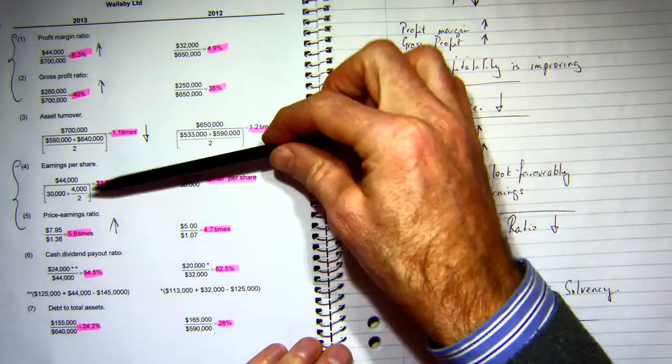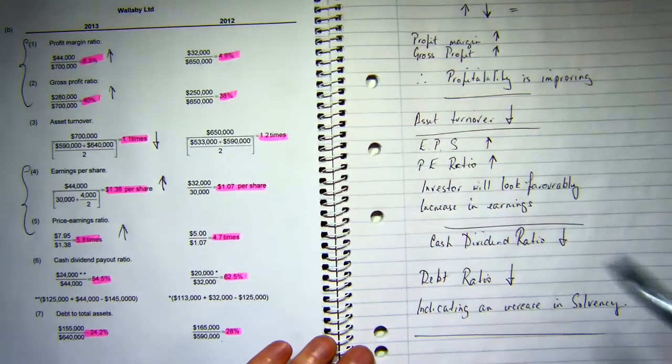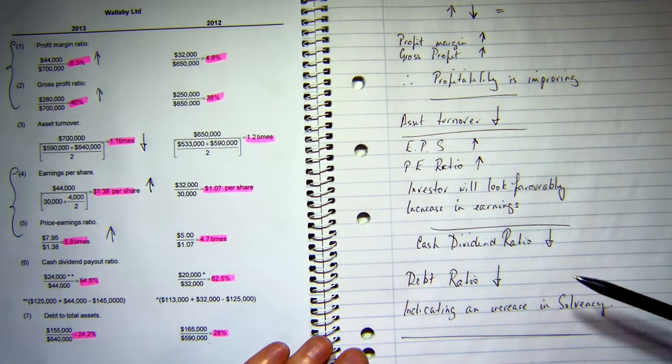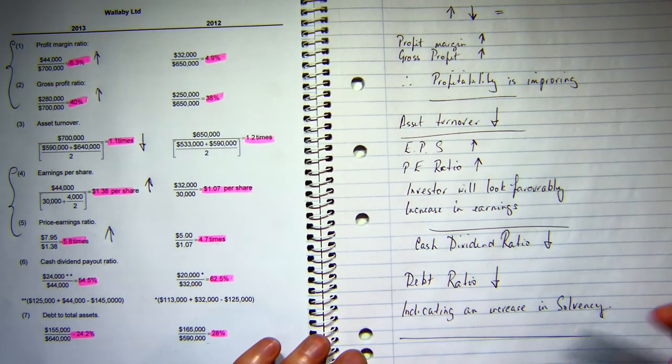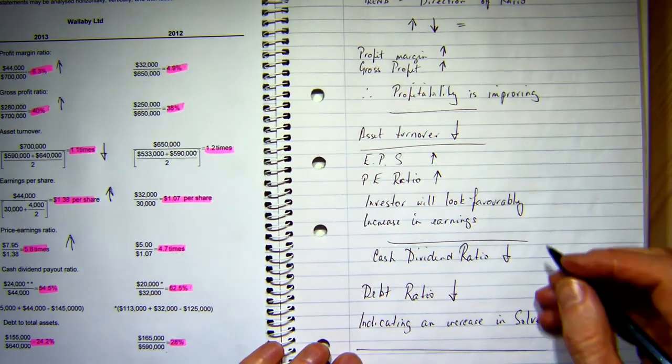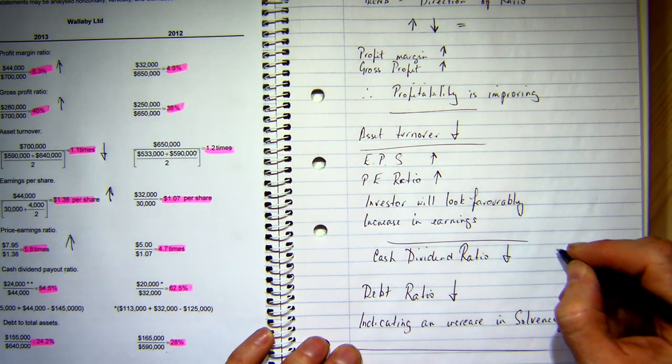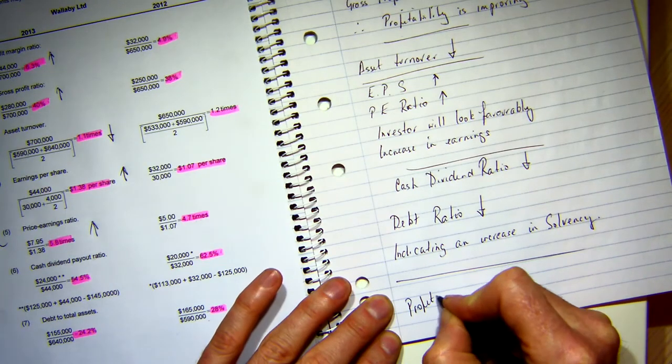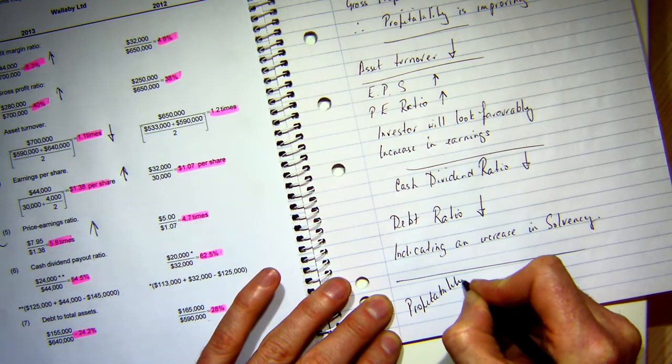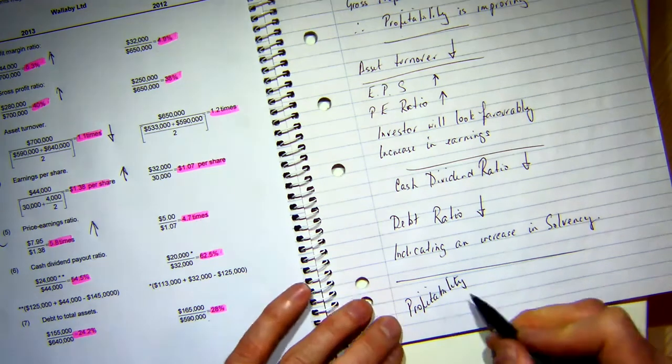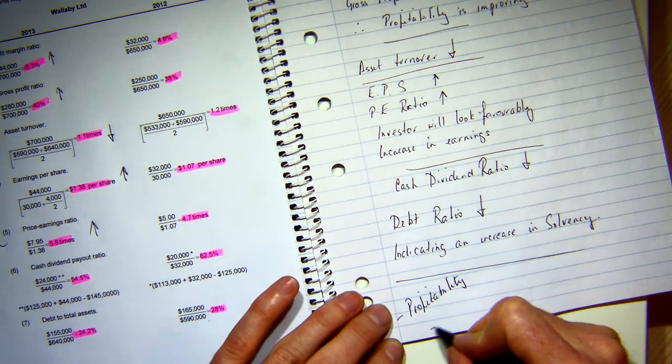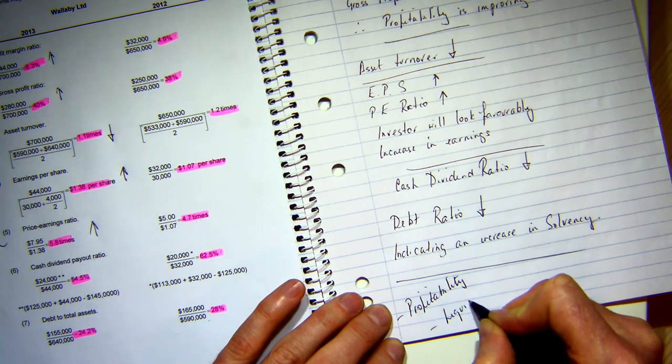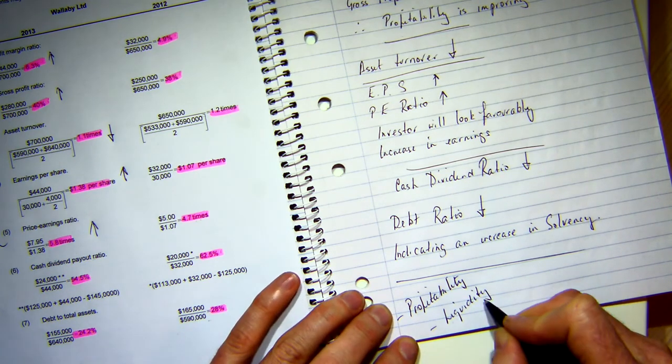Now what you'll need to learn is how to group your ratios into profitability, solvency, and liquidity. We have groups of ratios and they are grouped into profitability, liquidity, and other categories. Find out which ratios go into profitability and liquidity.